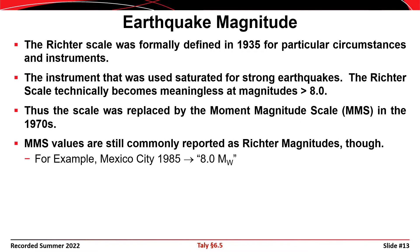As a result of Richter scale saturation, it was replaced by the moment magnitude scale (MMS) in the 1970s. MMS values are still commonly reported as Richter magnitudes but carry the abbreviation M sub W. For example, the Mexico City 1985 earthquake is listed as 8.0 M sub W.